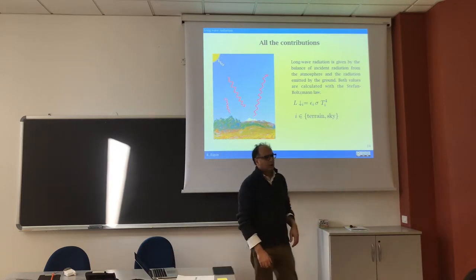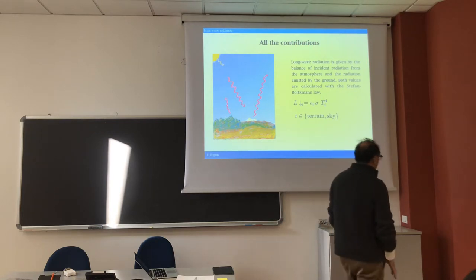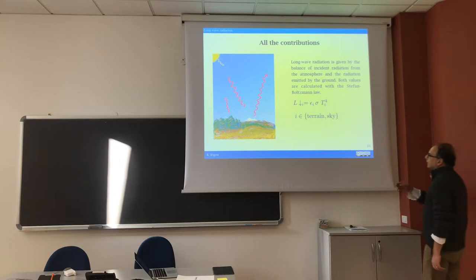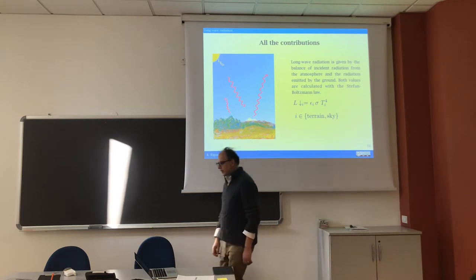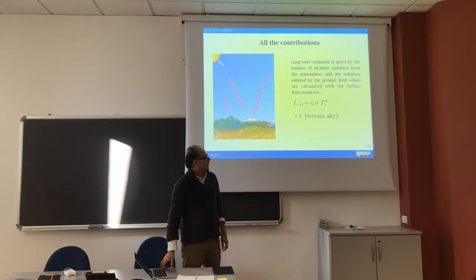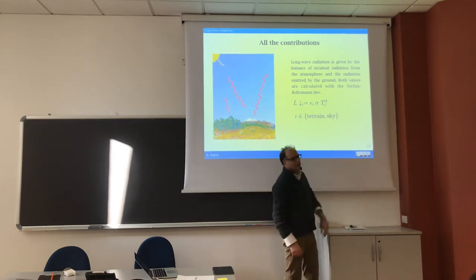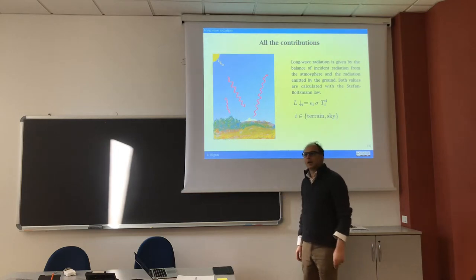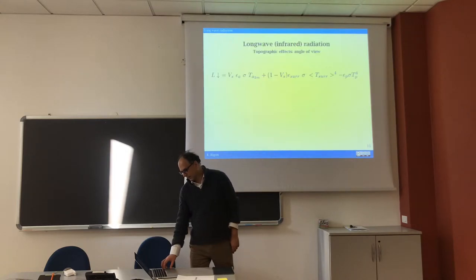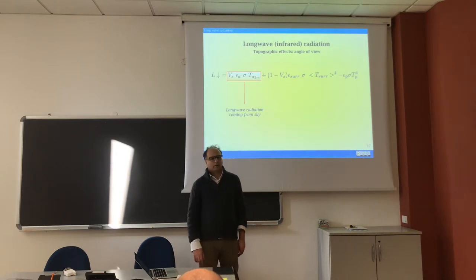The equation for longwave radiation uses the Stefan-Boltzmann law. We have the longwave incoming from the atmosphere, and this has at least two parts: the part from the sky and the part from the terrain. So we have at least two terms to account for when estimating incoming longwave radiation.